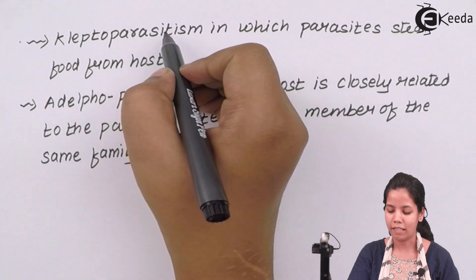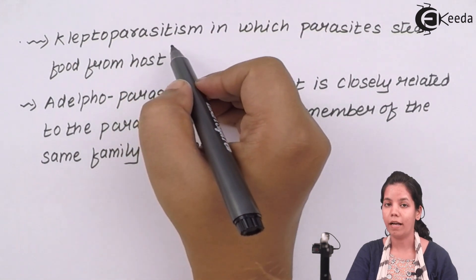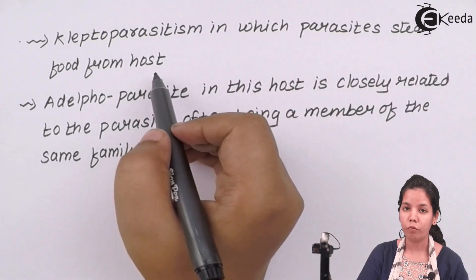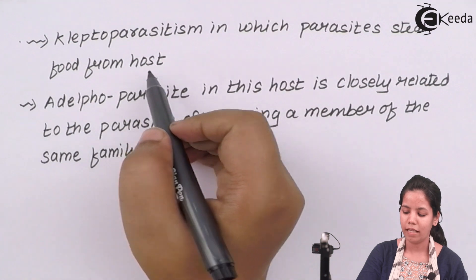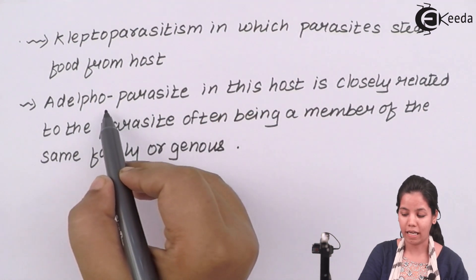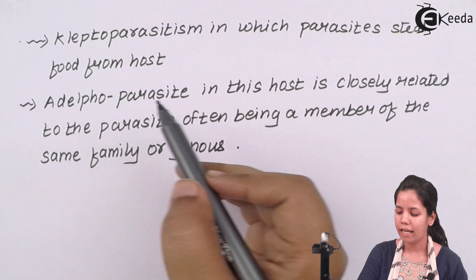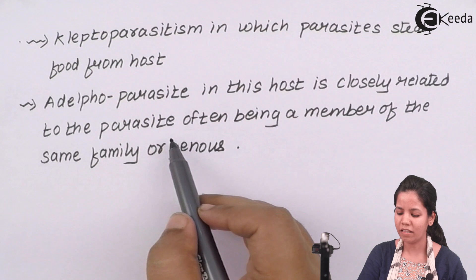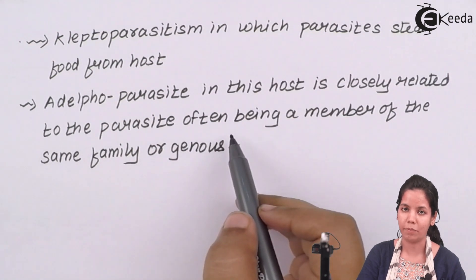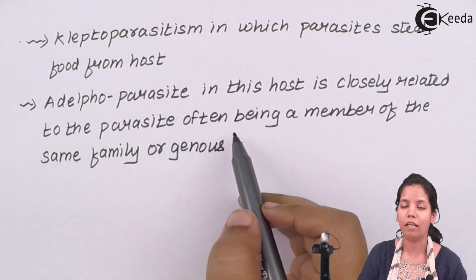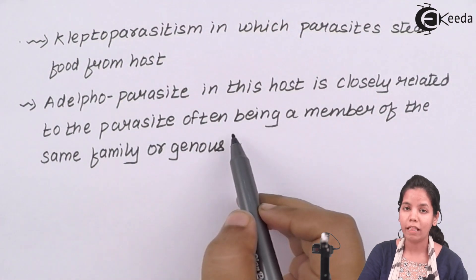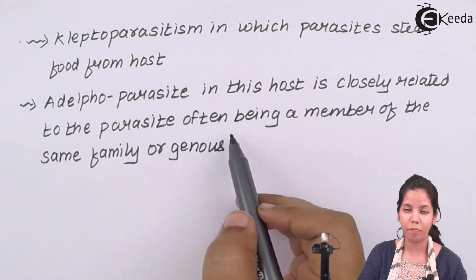Another form of parasitism is kleptoparasitism. In this form, the parasite basically steals food from the host organism. Lastly, adelphoparasitism — in this, the host is closely related to the parasite and is often a member of the same group of organisms. For example, two different forms of E. coli — the harmful form and another beneficial form — can exhibit this type of parasitism in human beings or other organisms.